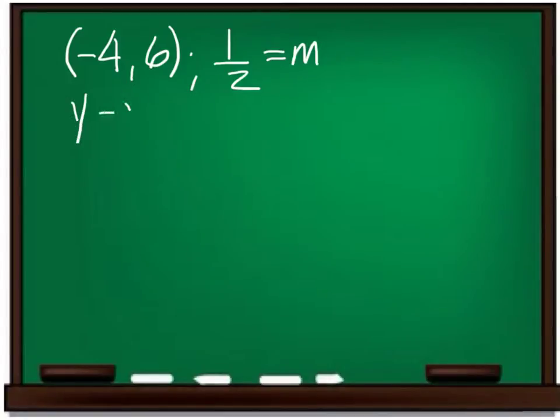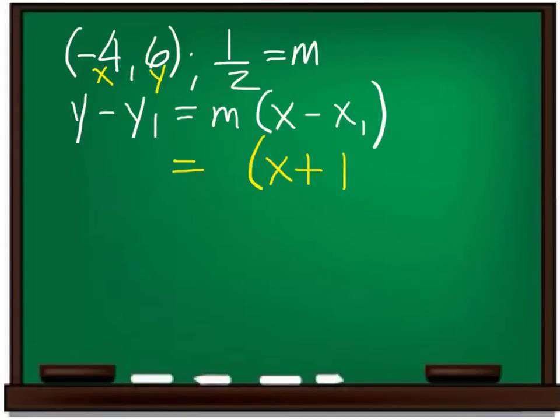The point-slope is y minus y1 equals m times the quantity x minus x1. You have to dump in the point. The point is xy. Always xy. If I put a negative 4 in for x1, that's going to give me a double negative. So it's x plus 4.